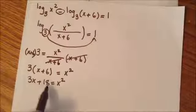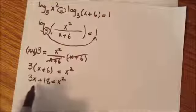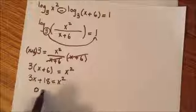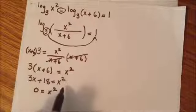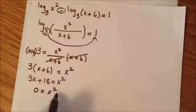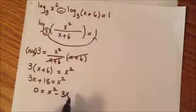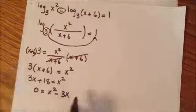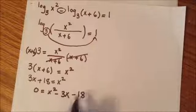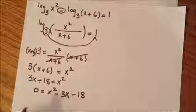Now I'm going to move everything to the other side. So I'm going to have 0 equals x squared. Since we have a positive 3x, when we move it to the other side it's going to become negative, so we're going to have negative 3x. And then positive 18, when we move it to the other side, it's going to become negative, so we're going to have negative 18. Now we have to solve for x.